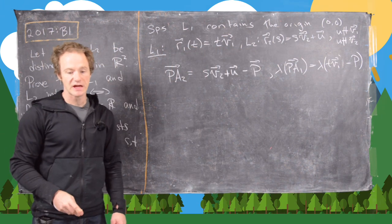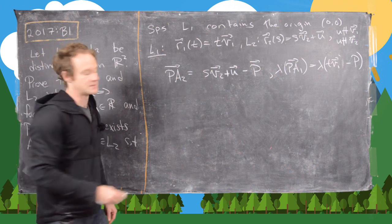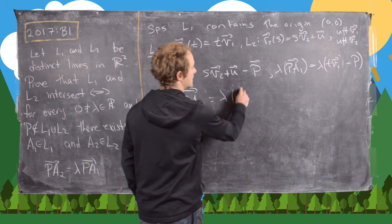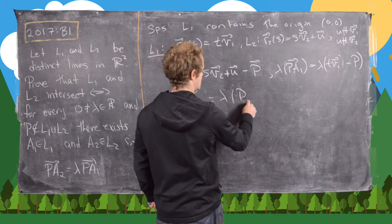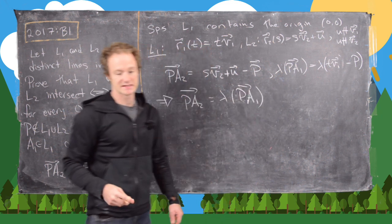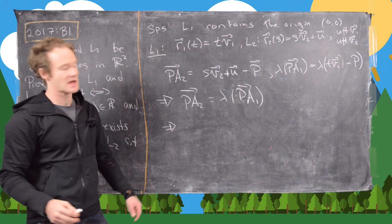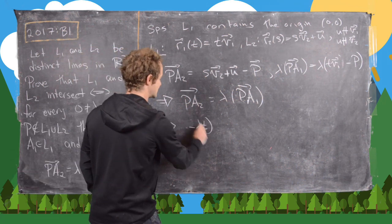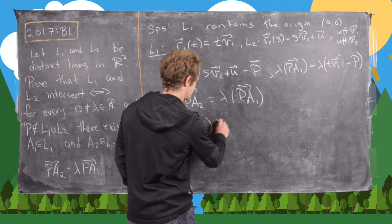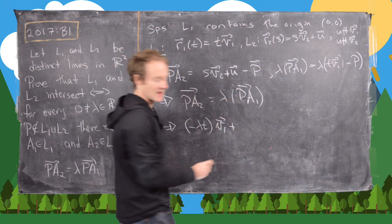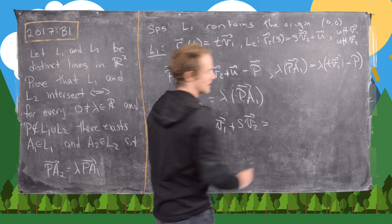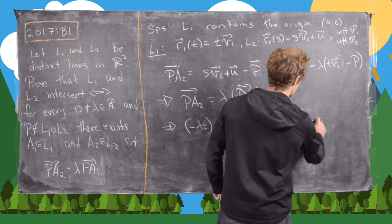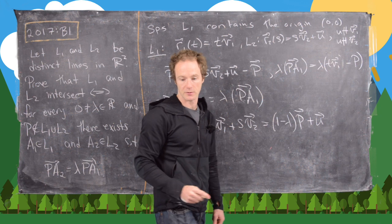Setting those two equal to each other gives us the following equation. Notice that PA2 equals lambda PA1. I've rewritten it a bit, but it's just simple arithmetic to rewrite it this way: negative lambda T times v1 plus s times v2 equals 1 minus lambda times the vector P plus the vector u.